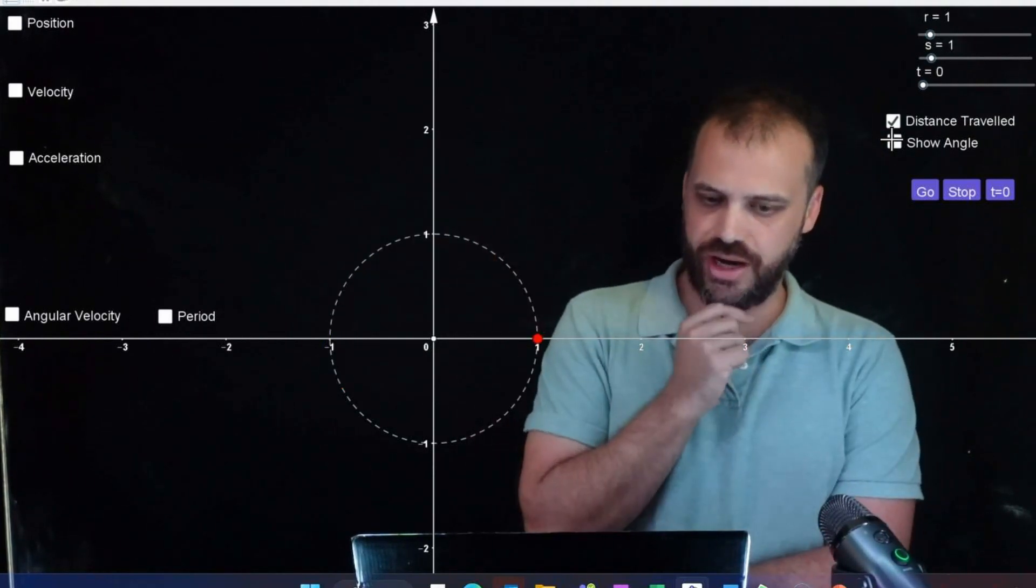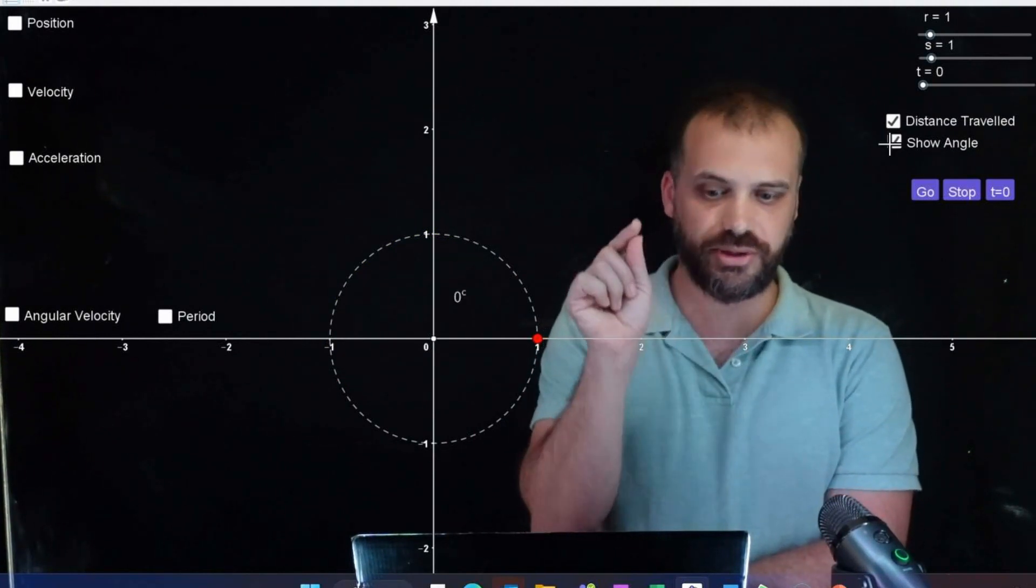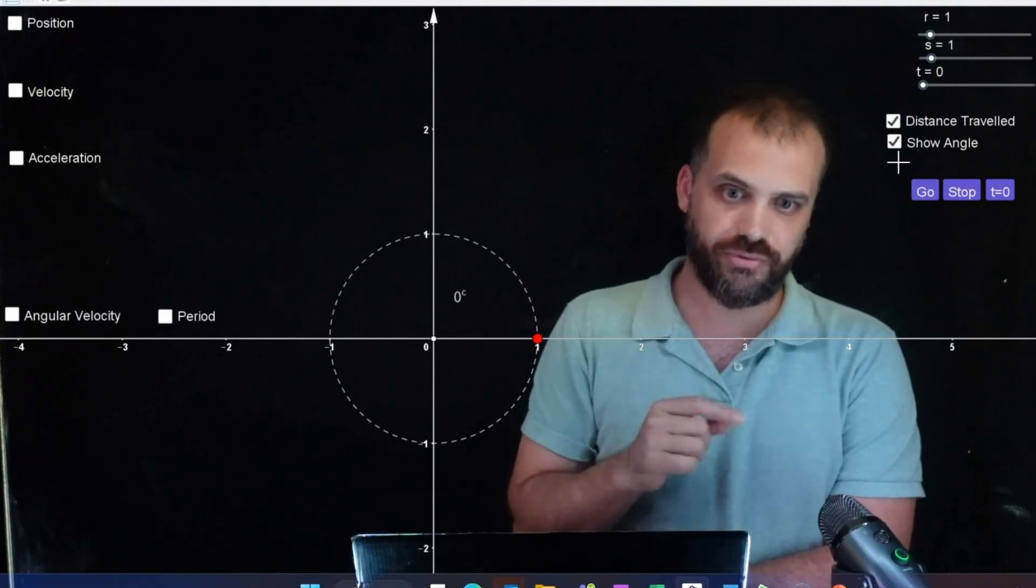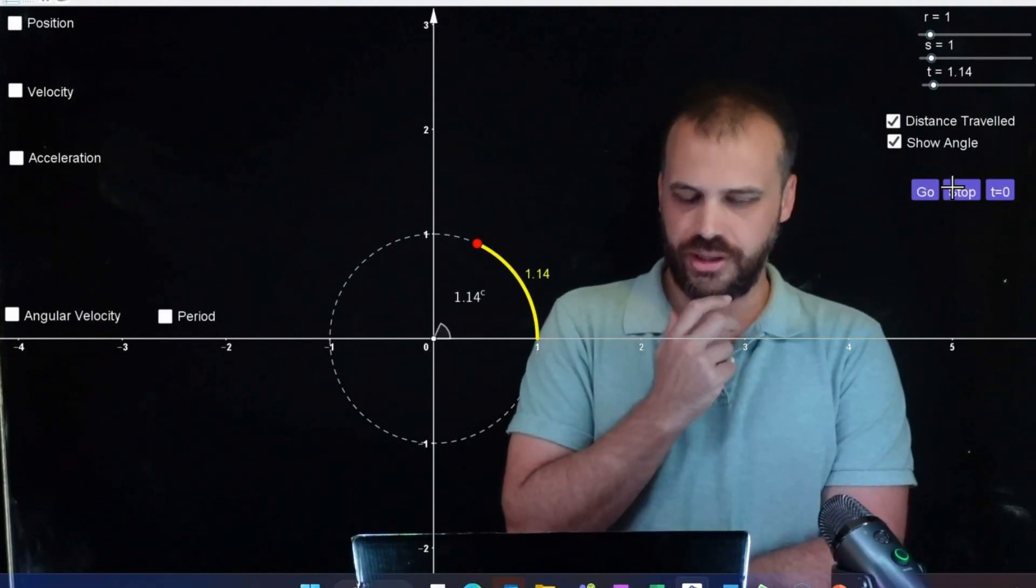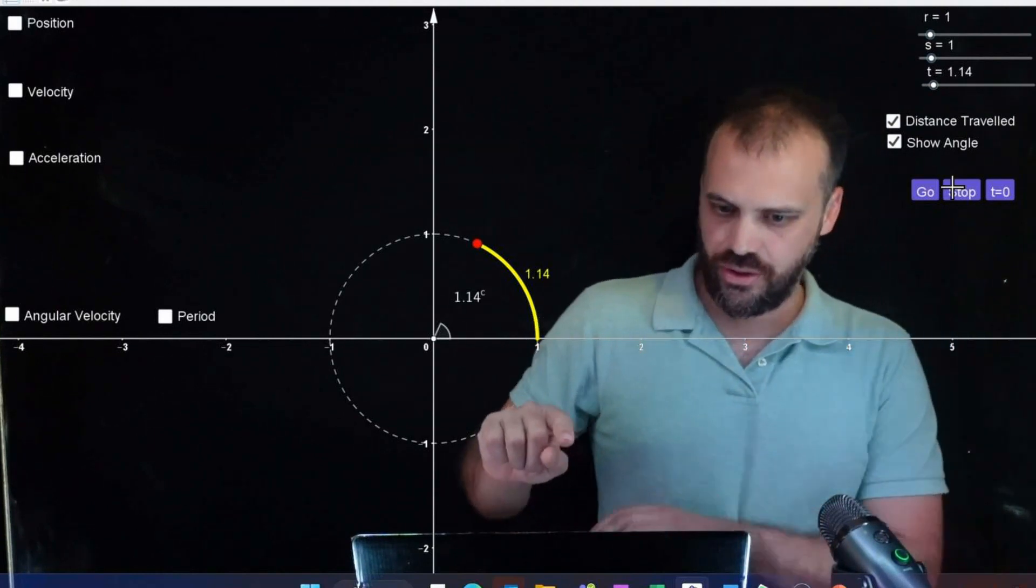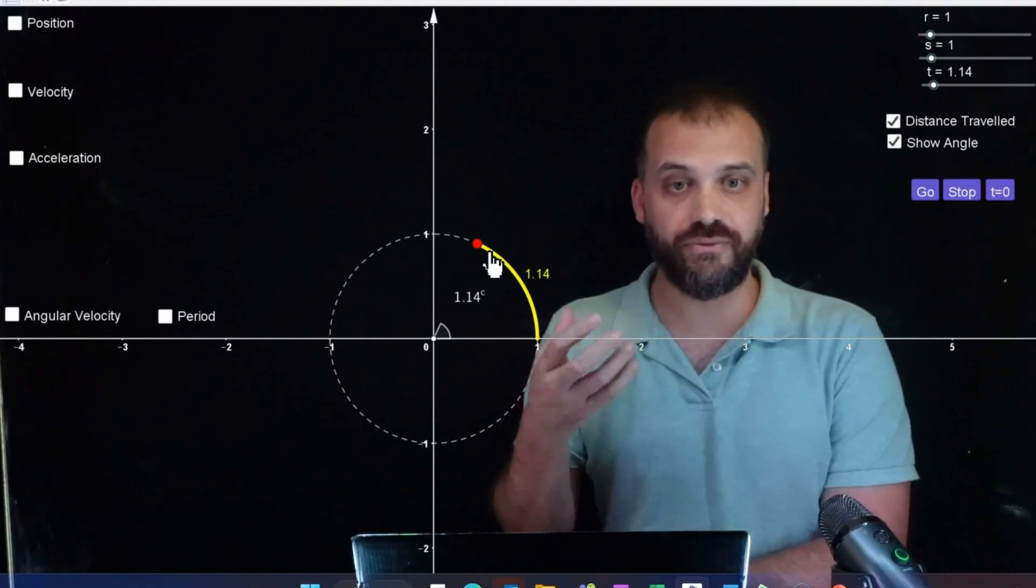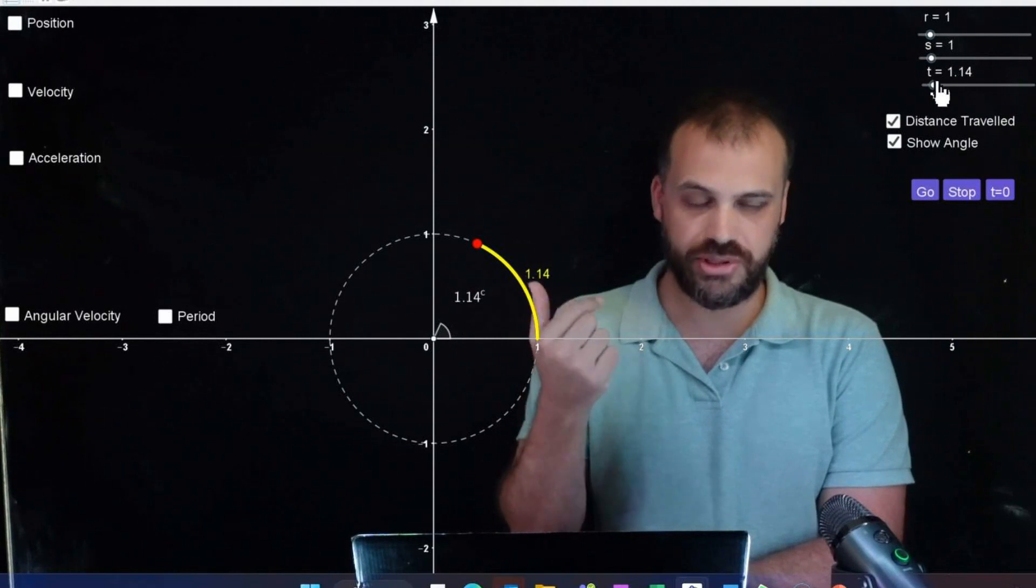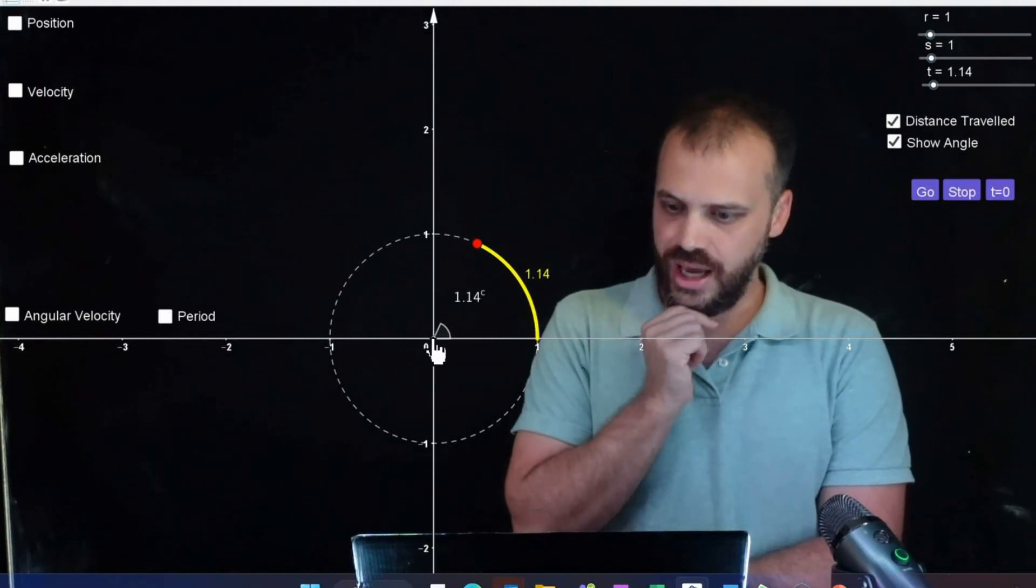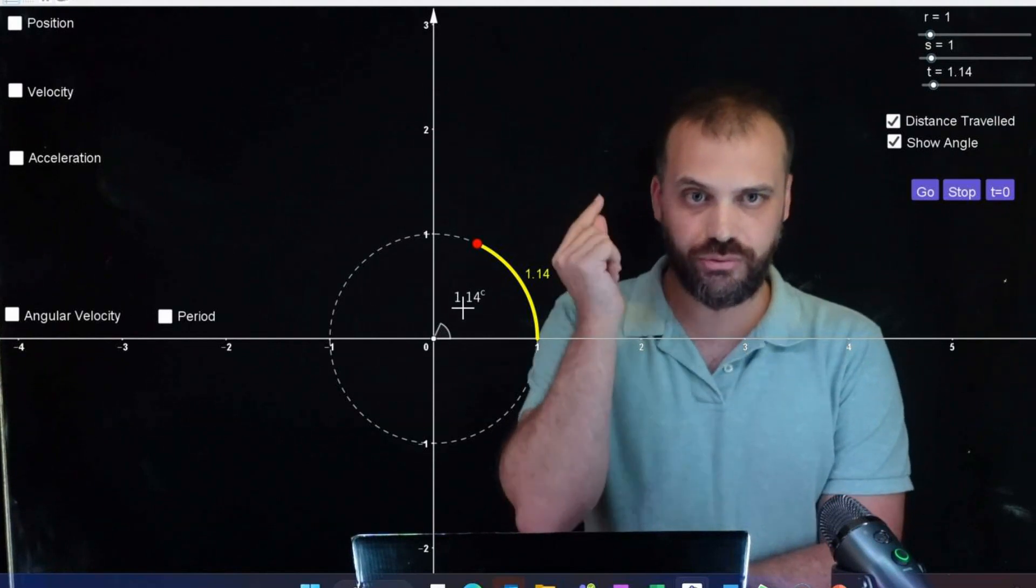Now I've reset my variables again - radius one, speed one, time equals zero. Let's look at the angle, the angle in radians. We're going to work in radians here. And go. Okay, and stop. Okay, after 1.14 seconds, I've traveled 1.14 meters, because my speed is 1, so the time and the speed are going to be equal to each other. And that's equal to 1.14 radians.